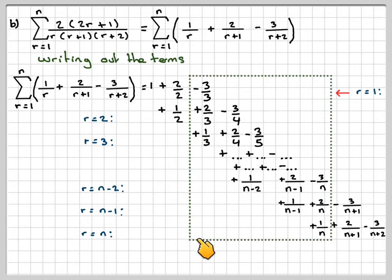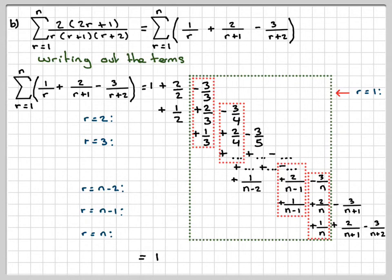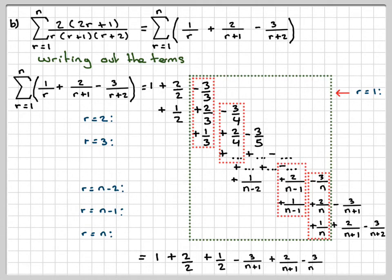Now considering the terms in the green box: we have -3/3 + 2/3 + 1/3, which cancel out. Similarly at the end, -3/n + 2/n + 1/n also becomes 0. All the intermediate terms cancel to 0 as well. So we're just left with the terms outside the green box.